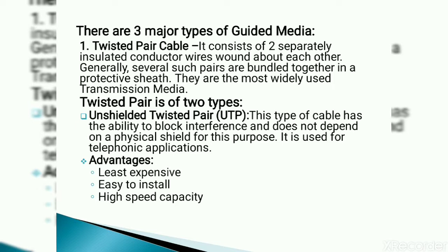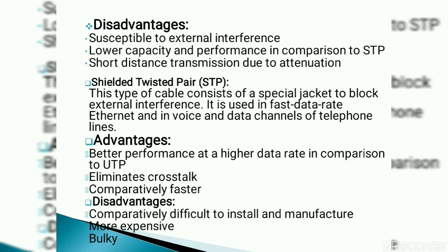In UTP, the cable has the ability to block interference. The twisted wire has some plastic material deposited over it. Advantages of UTP: least expensive, easy to install, high-speed data transmission. Disadvantages: susceptible to external interference, lower capacity and performance compared to STP, and short-distance transmission due to large signal attenuation.